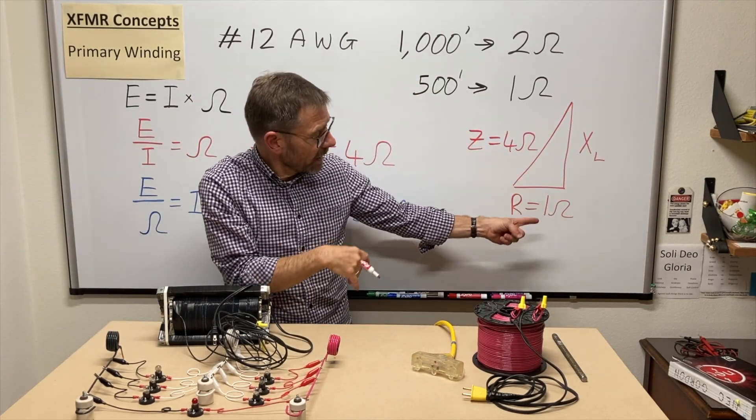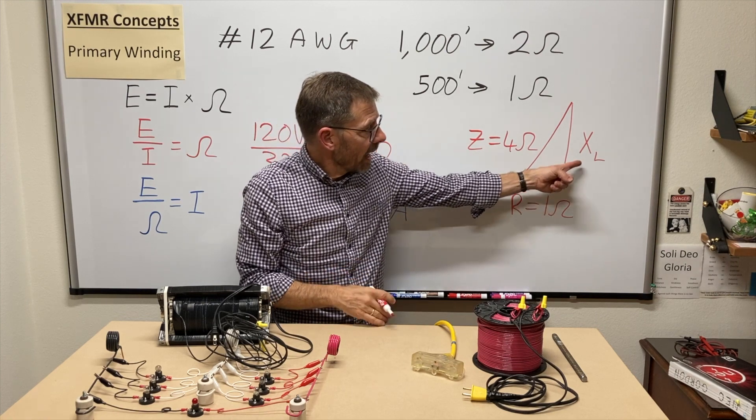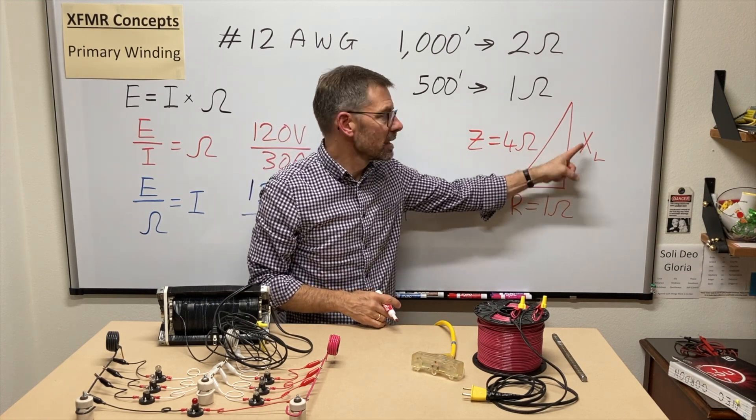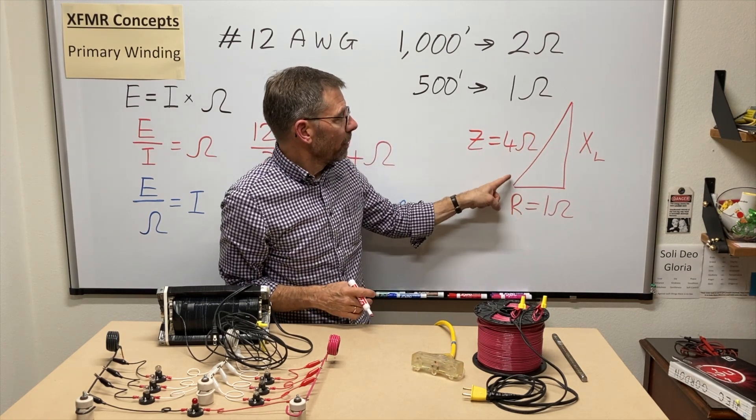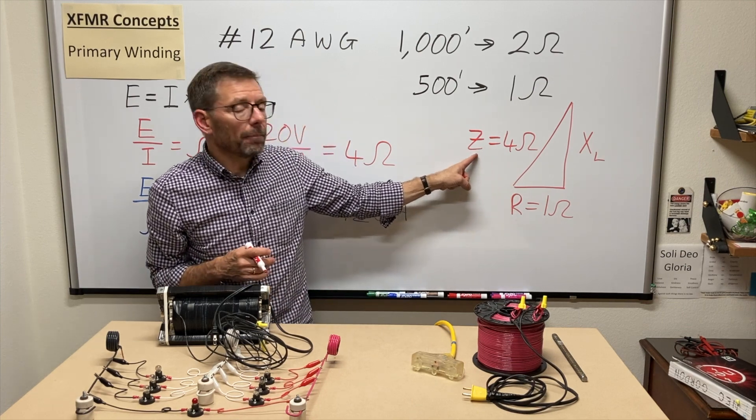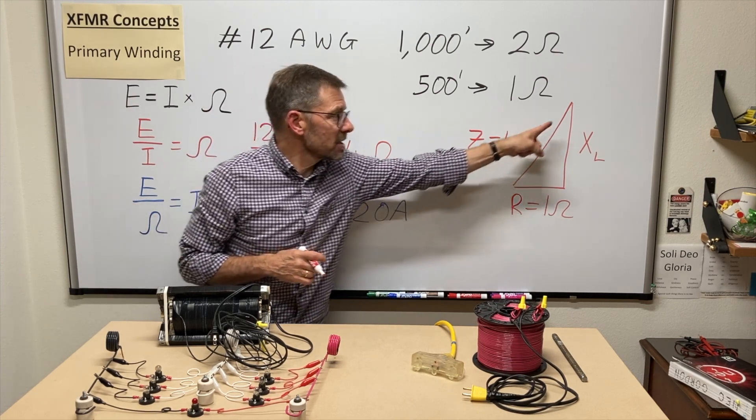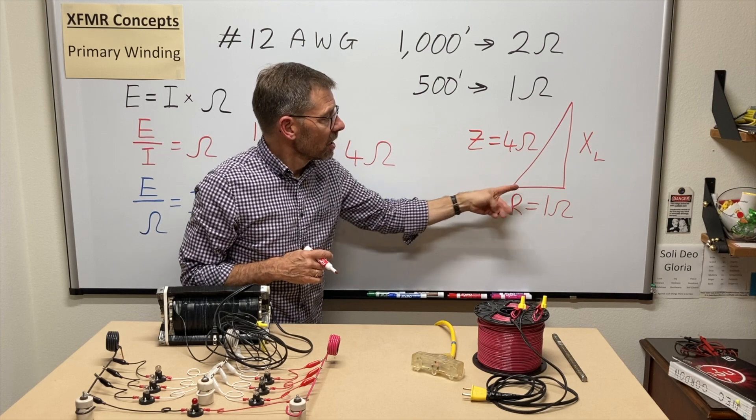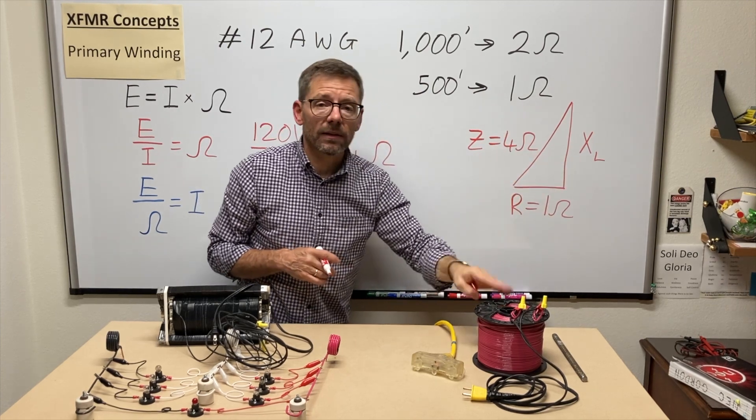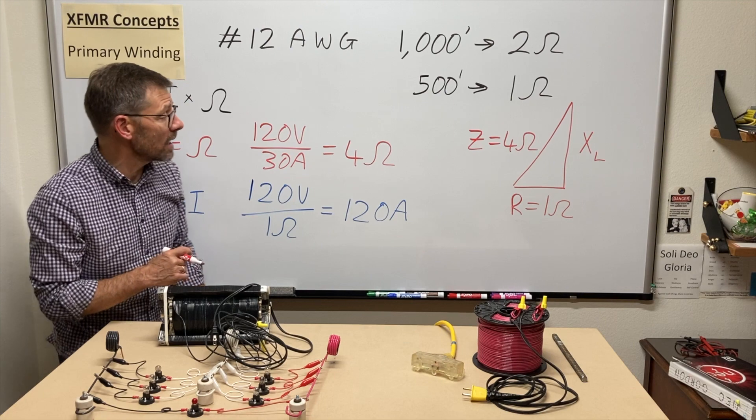The opposition was made up of some resistance and some inductive reactance, for a total of about 4 ohms of impedance. My total opposition is that hypotenuse. You could do Pythagoras backwards and figure out exactly what the inductive reactance on that coil was.